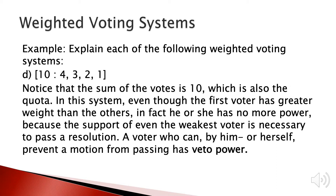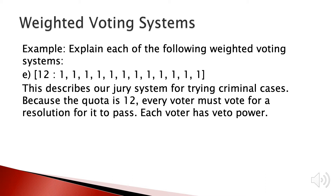In this example, the sum of all weights for the voters is equal to the quota, meaning the system needs all voters to vote for pass to pass a resolution. Every voter can prevent a resolution from passing, so we say each voter has veto power. This is the 12 angry men case — the system needs 12 votes to pass a resolution, there are exactly 12 voters each with one vote, and every voter must vote for pass.